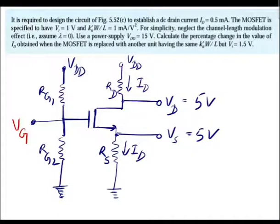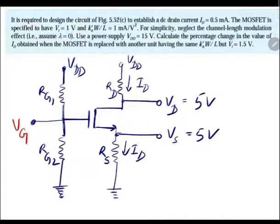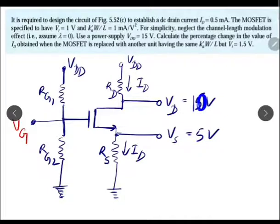The circuit diagram is as shown. We need to determine Rg1, Rg2, Rd, and Rs values, as well as the biasing voltage Vg. A design rule is applied: one third of Vdd drops across Rd, one third across Vds, and one third across Rs. Therefore VD = 10 volts and VS = 5 volts.